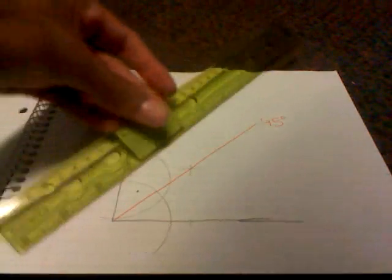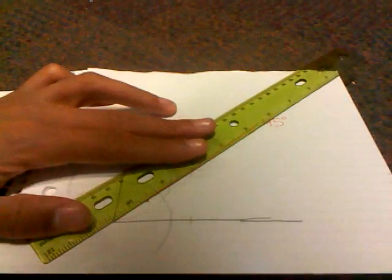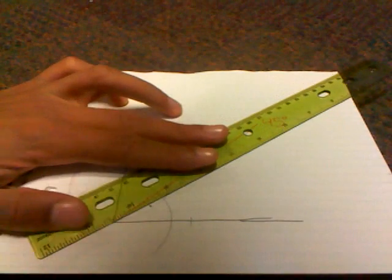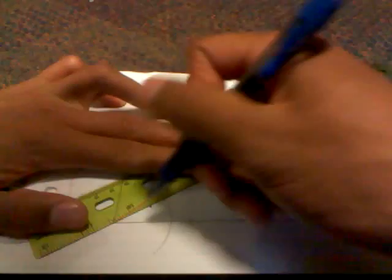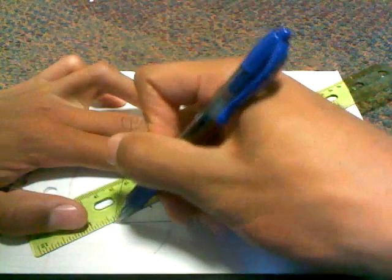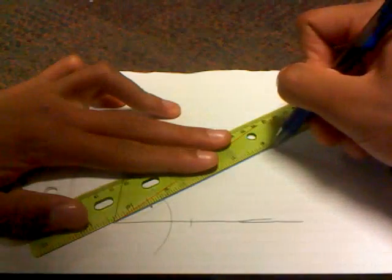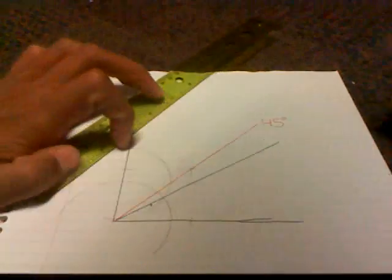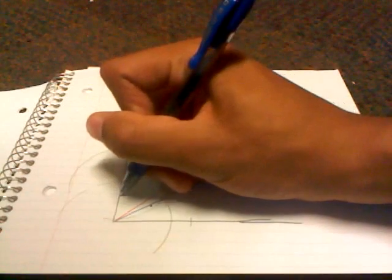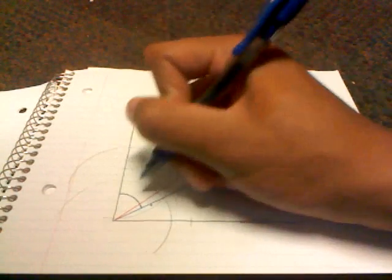And now we're going to draw a line from the origin through the point where the two circles intersect, making this whole distance 60 degrees.